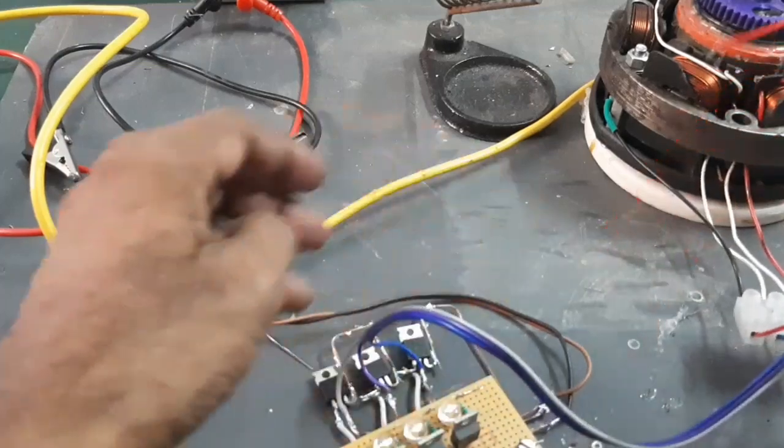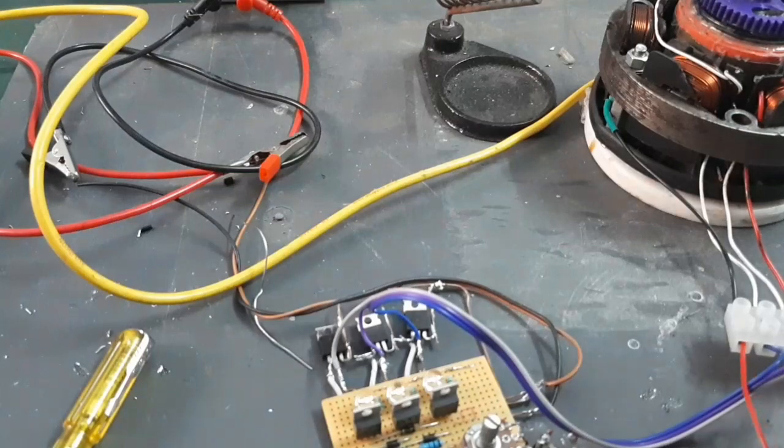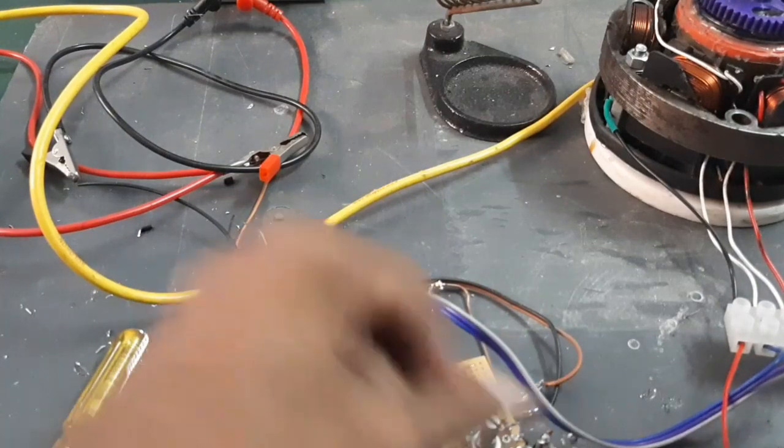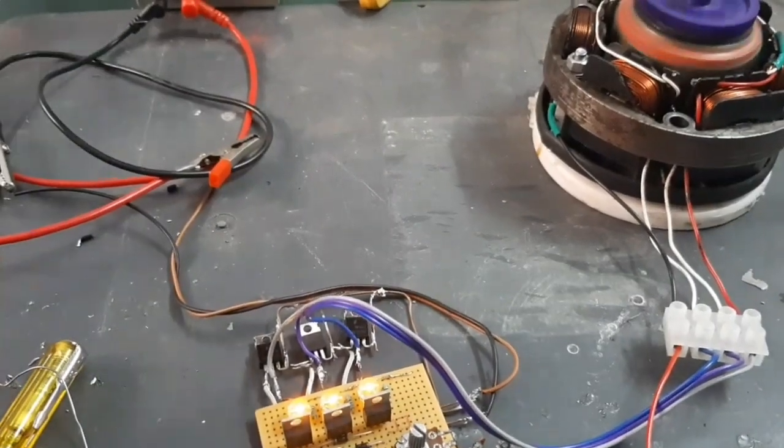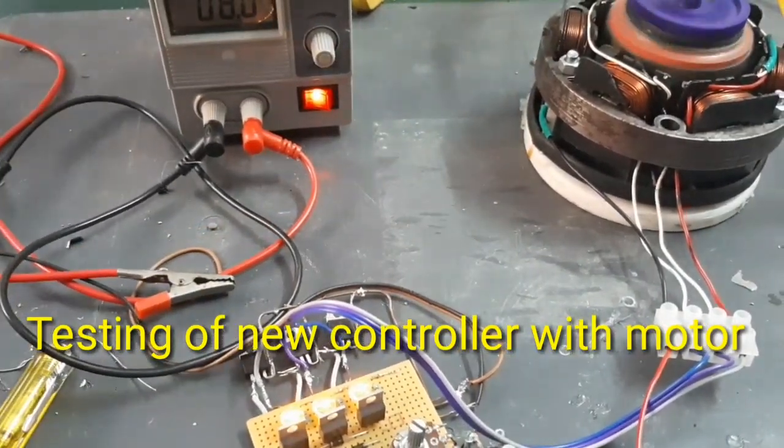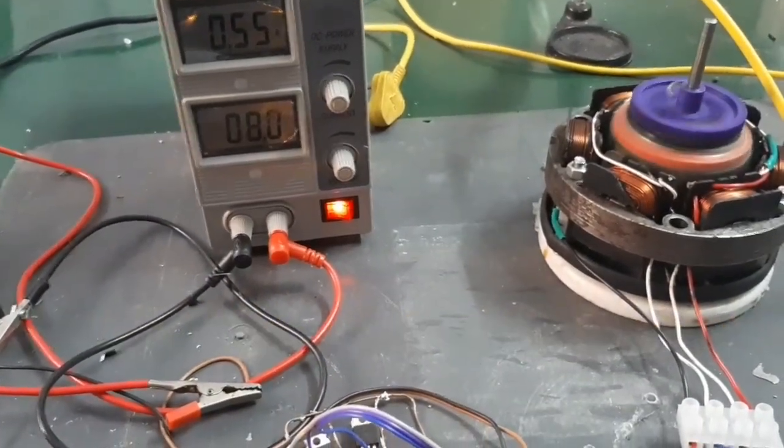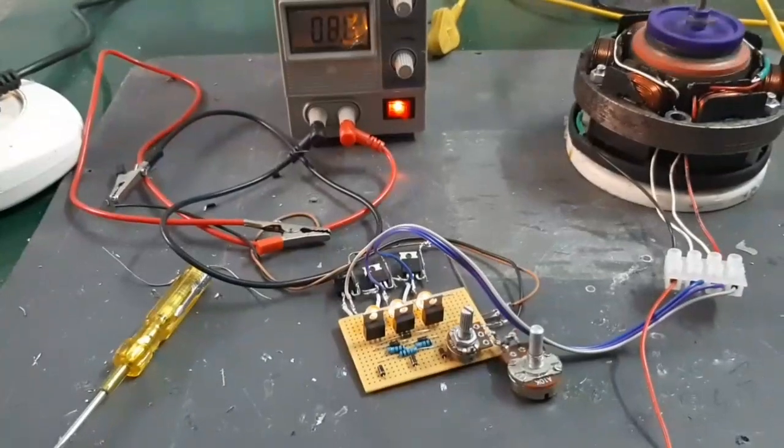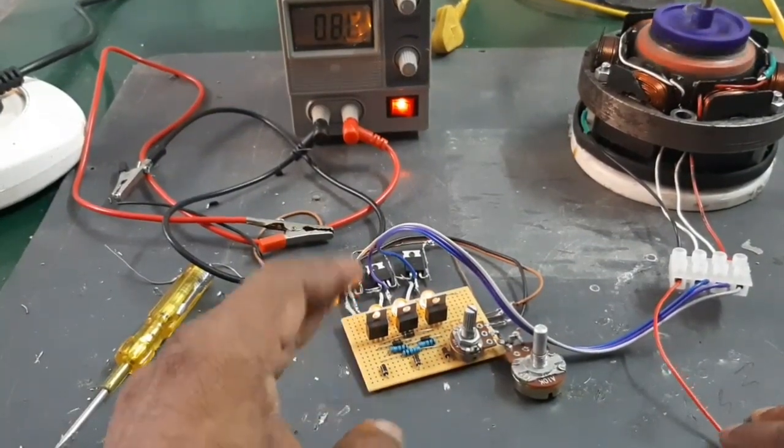Here I connect only the three leads, the common lead is disconnected. Now I am going to test the motor. Here, the three-wire BLDC motor controller is working.